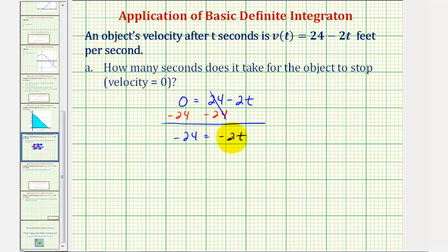Then we divide both sides by -2, so we have t = 12, which means it takes 12 seconds for the object to stop.